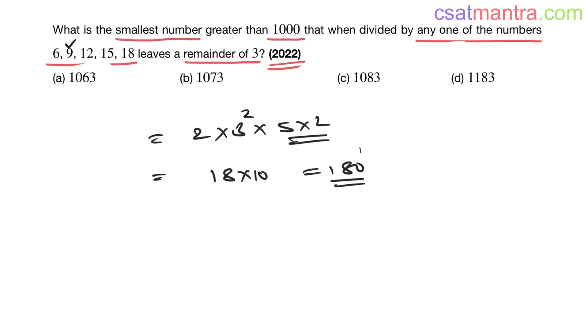180 is divisible by these numbers, so 180n is also divisible by these numbers. The remainder should be 3, so our number is 180n + 3. 180n is divisible by these numbers, and remainder 3 is satisfied.